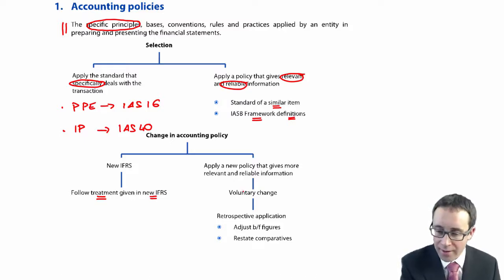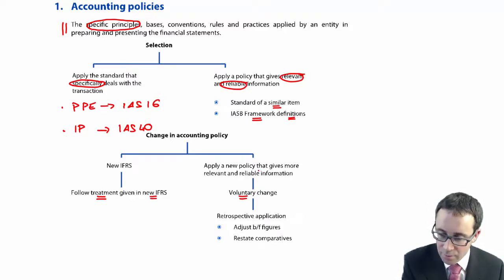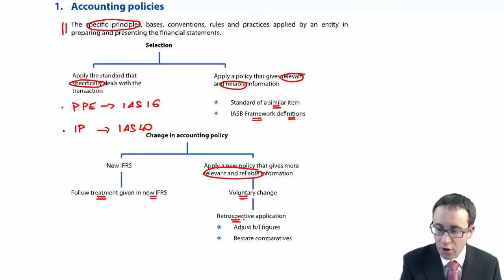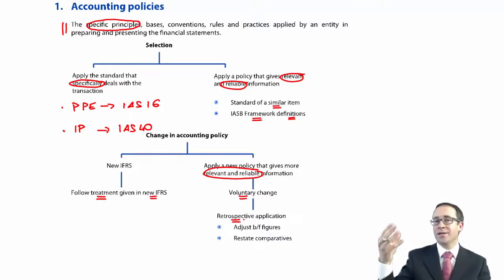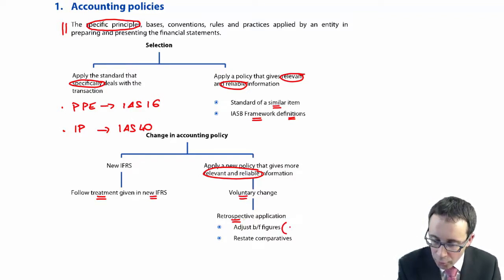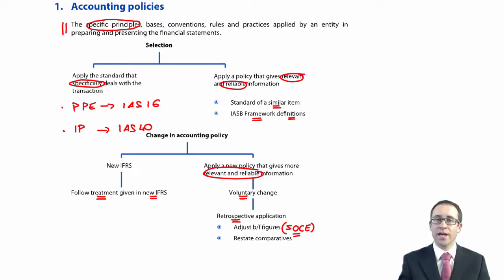However, it may be that what you have is a voluntary change — and the reason why it is voluntary is because you believe the new policy gives more relevant and reliable information. If that's the case, you apply what is known as retrospective application. You restate the prior year figures as if you had always had that accounting policy. The asset or liability may go up or down, and the corresponding entry goes through retained earnings, adjusted within the statement of changes in equity. So you restate the prior year comparatives and the movement in the prior year figure goes into your opening retained earnings.